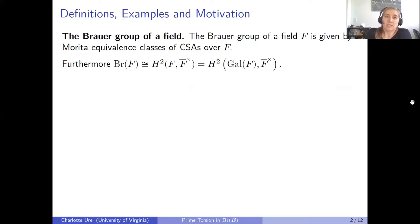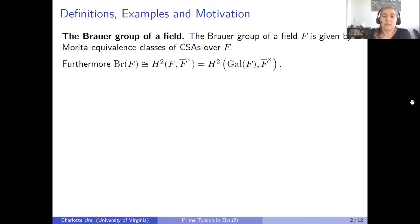A classical result related to the Brauer group is due to Brauer, Albert, Hasse, and Noether, which shows that the Brauer group of a field is actually isomorphic to the second group cohomology H²(F, F̄ˣ). Whenever I write H²F, what I mean is group cohomology where the group is the absolute Galois group of the field F, and F̄ˣ means the units in the algebraic closure of F.